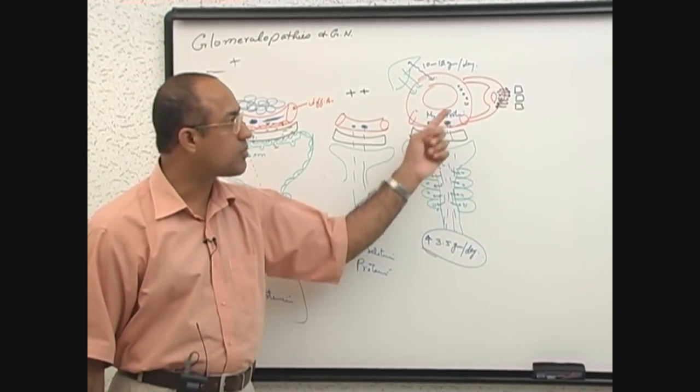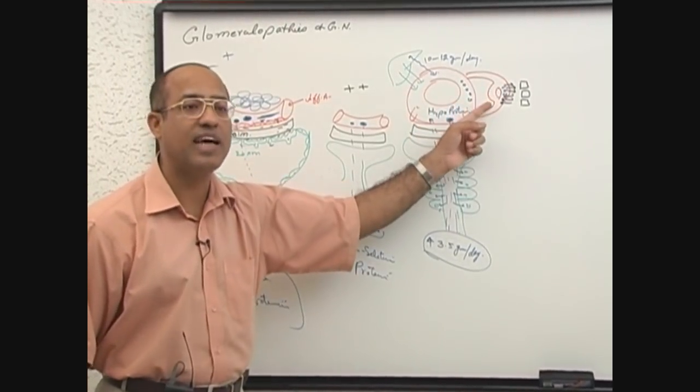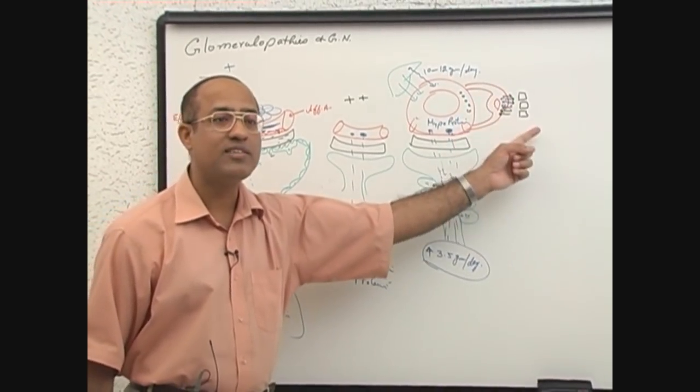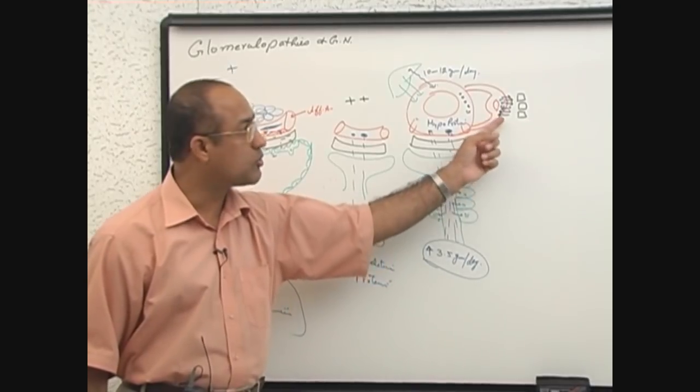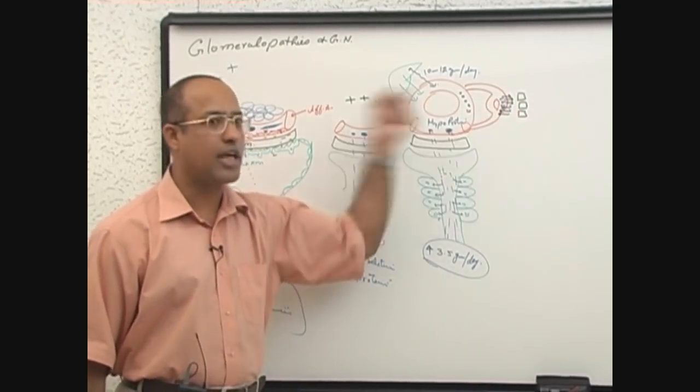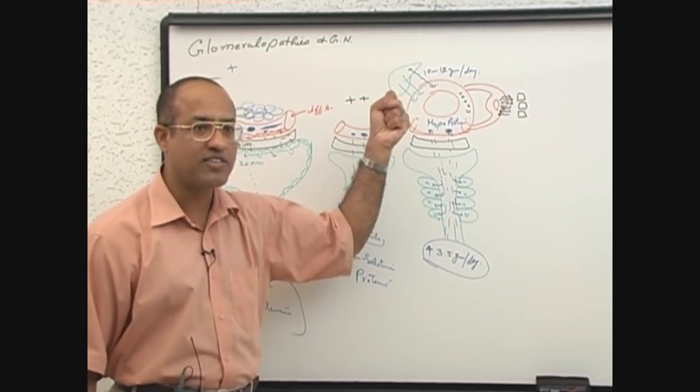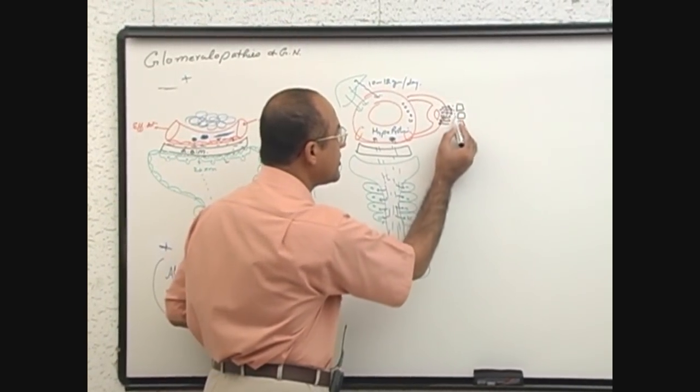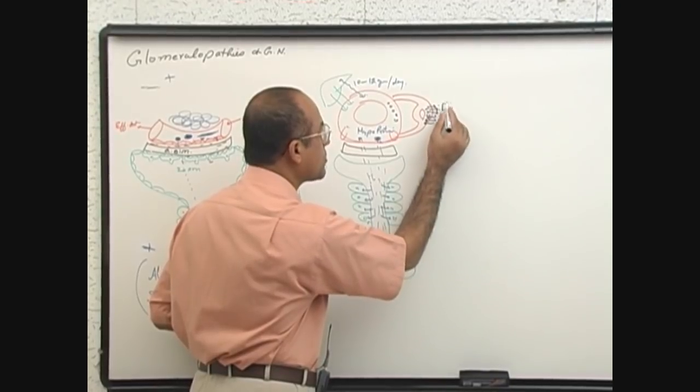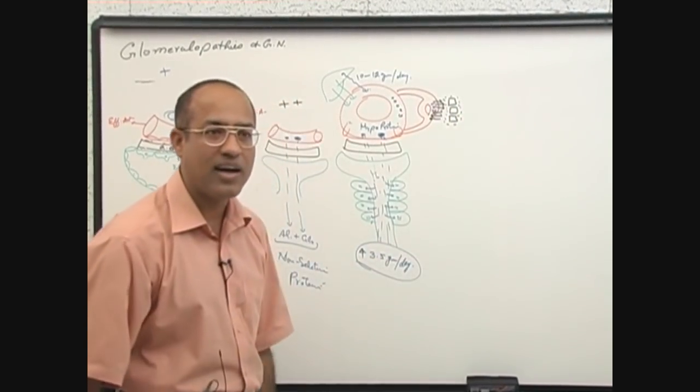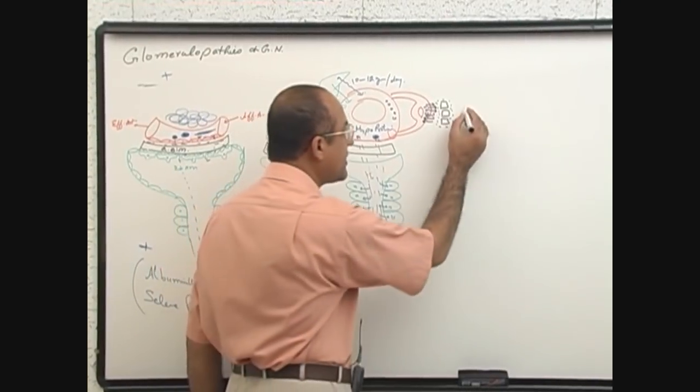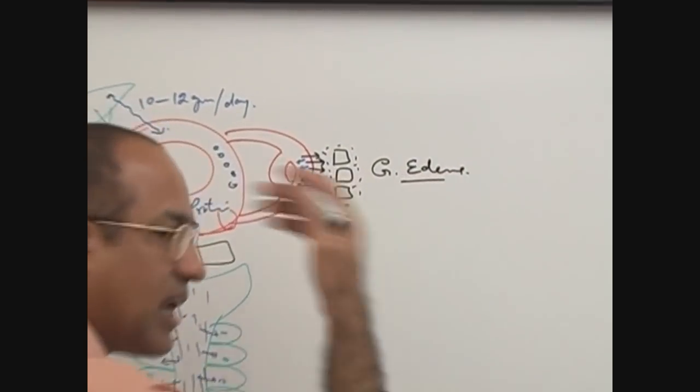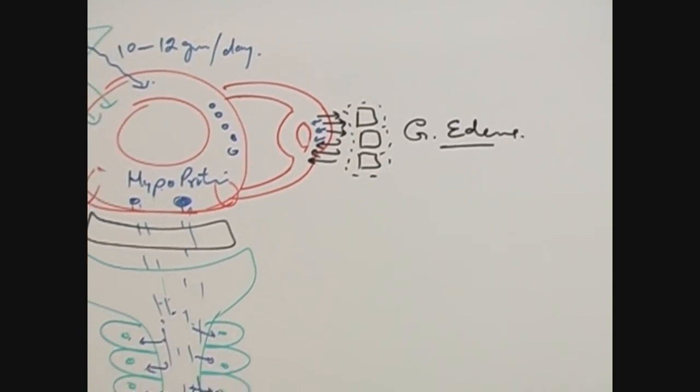When protein level becomes significantly low, then osmotic pressure in the capillaries becomes so less that on the arterial end of the capillaries, extra fluid is leaking out, and on the venous end of the capillaries, reclaiming of the fluid by the circulatory system is poor. So excessive fluid accumulates in interstitial spaces and that adds to the situation which is called edema, and because this happens all over the body, we call it generalized edema.